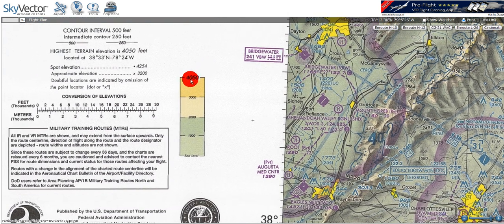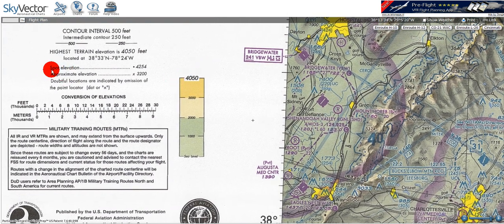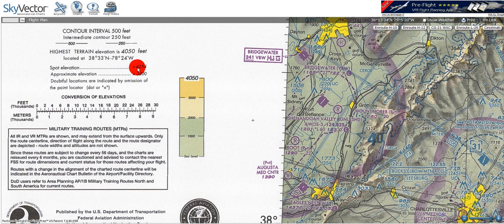Looking back over here at the information, we can see that there are two types of elevations. There's a spot elevation, which is given by a dot or a spot, and there's an approximate elevation, which is given by an x. The only difference between these two is the precision to which the measurement was taken. Both of these are given in MSL, or feet above mean sea level. Looking on our chart, we can see many such examples of spot elevations — for example, here is a spot elevation of 2,741 feet.